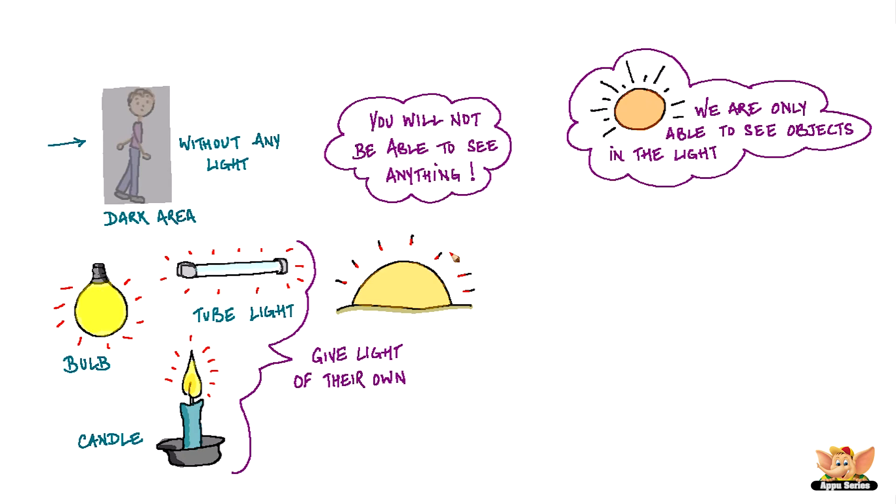We are able to see objects during the daytime with the light from the sun. Objects that emit or give out light of their own are called luminous objects.